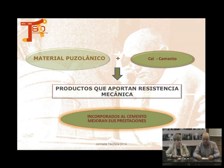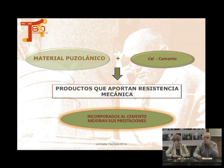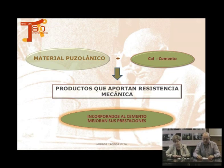¿Pero qué es un material puzolánigo? Os lo voy a explicar sin ninguna fórmula química, aunque alguno de vosotros ya está estudiando química, o si no lo vais a estudiar en un futuro. El material puzolánigo es un material que cuando se mezcla con cal, como hacían los romanos, o se mezcla con cemento, como hacemos ahora, pues endurece y nos da resistencia mecánica. Podemos hacer casas con esos materiales. Y eso es un material puzolánigo.